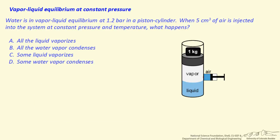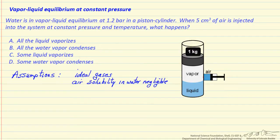First, we have to look at what assumptions we make for this system. We assume the pressure is low enough that we can assume ideal gases, and then we assume the solubility of air in the liquid phase — water — is negligible. We're at 1.2 bar for liquid water, and the temperature is above 100 degrees C, so the solubility is going to be pretty low at this elevated temperature.